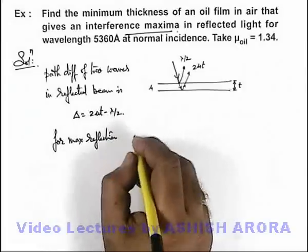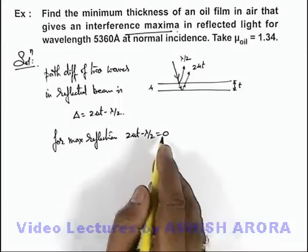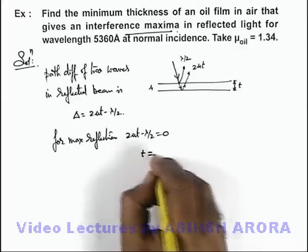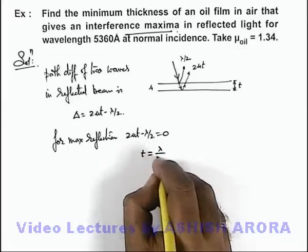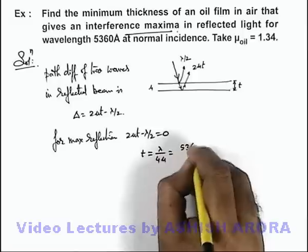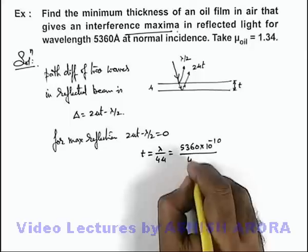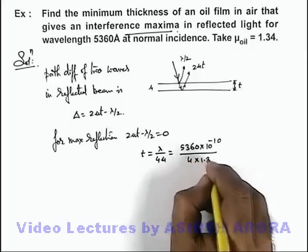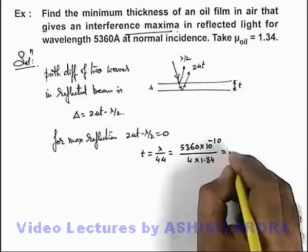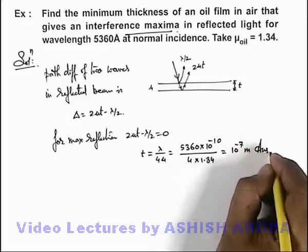So here, 2μt minus λ/2 must equal zero, which corresponds to the first maxima. The value of film thickness is therefore t = λ/(4μ). Substituting the values: 5360 × 10⁻¹⁰ divided by 4 × 1.34, on simplifying we get t equal to 10⁻⁷ meters, which is the answer to this problem.